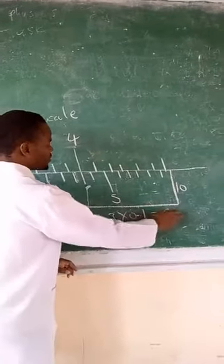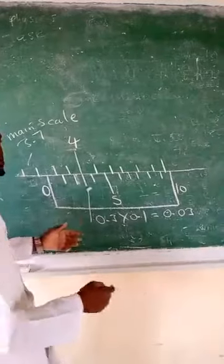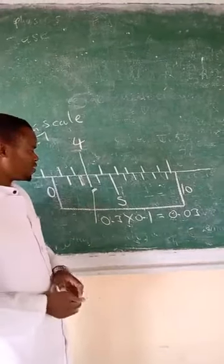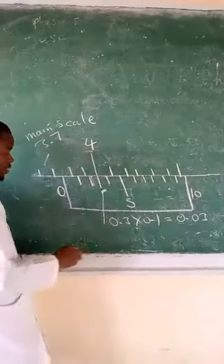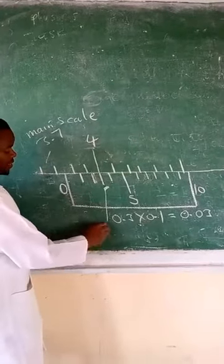So now after you have picked the readings on these two scales, you need to add them. That's the third step. So now we're going to have the following: we're going to say the reading therefore is equal to 3.7 plus 0.03.